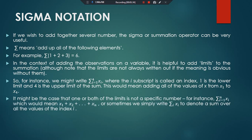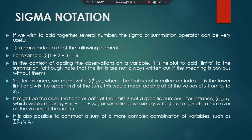It may be the case that one or both limits is not a specific number. For instance, sigma with i from one to n — here the upper limit is n and the lower limit is one — which means we add x1, x2, and so on up to x_n. Sometimes we can write it simply as summation over index i of x_i, to denote a sum over all values of the index i.